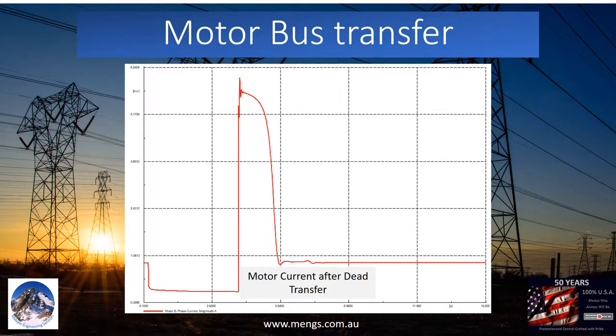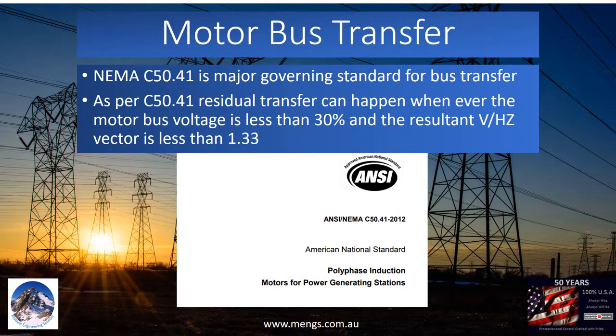If the transfer time is about seconds, then the re-acceleration current is as high as lock rotor current. This happens in the case of dead transfer. NEMA C50.41 is the major governing standard for motor bus transfer. Per NEMA C50.41, residual transfer can happen whenever the motor bus voltage is less than 30% and the resultant volts-per-hertz vector, in per unit, is less than 1.33.